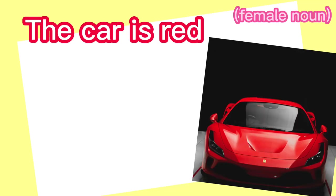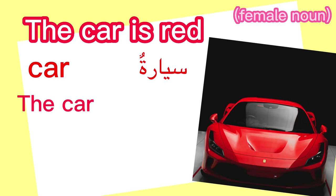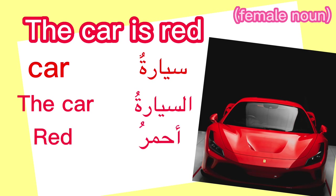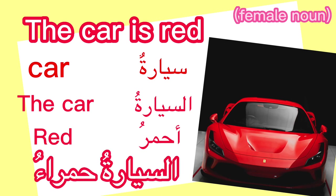This is a picture of a car. The car is red. Car is سيارة — سيارة is a female noun. The car: السيارة. Red: أحمر.